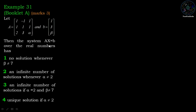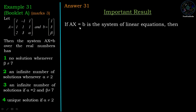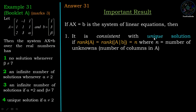This problem is associated with a system of linear equations, and the options concern the nature of solutions. We recall some important results: if Ax = B is a system of linear equations, it is consistent with a unique solution if rank of A equals rank of augmented matrix [A|B] equals n, where n is the number of unknowns or number of columns in A.